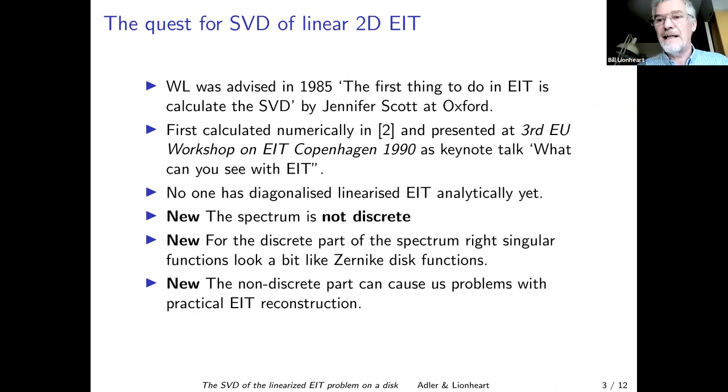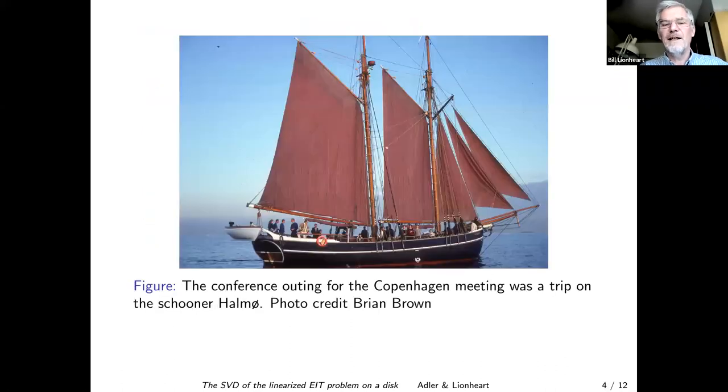But no one's managed to diagonalize it analytically yet. We've done it numerically, and here's the new information. It turns out the spectrum, in other words, the singular values are not discrete. They actually form a continuum. And the discrete part of the spectrum looks rather like Zernike dysfunctions. The non-discrete part can cause us problems, and that's a bit of a warning that that might cause difficulties in reconstruction. The Copenhagen EIT meeting had the best conference outing ever. We went on the ship and had a lovely dinner. I think you might be able to see Jack Neussian there on the ship.